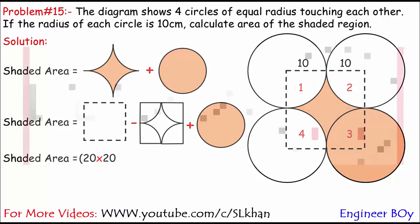And remember, four quadrants of a circle makes a full circle. And the area of a circle is always πr². So 20 times 20 minus πr² plus the area of a circle again.